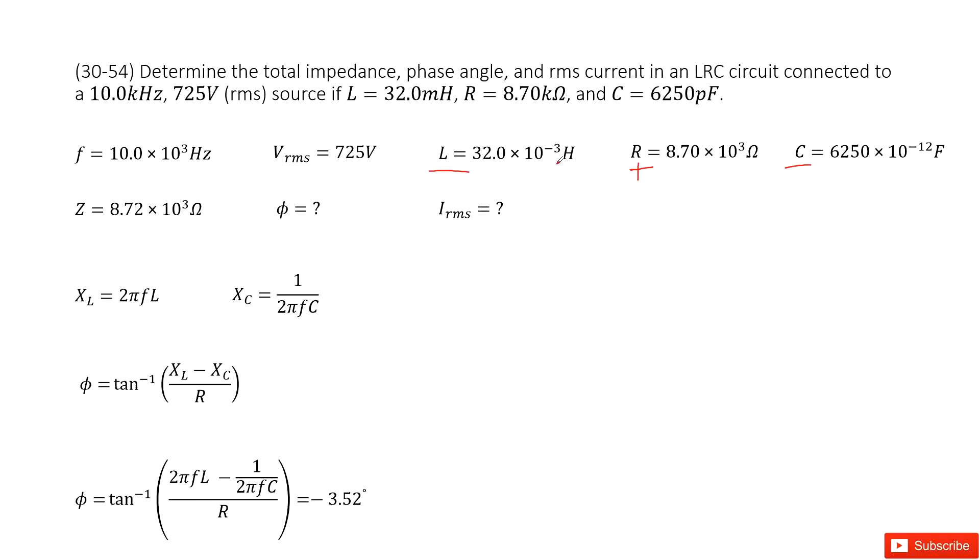The next one, we need to find the current at the root mean squared. So this is not very difficult. As we learned in this chapter, the root mean squared current can be calculated by the root mean squared voltage over impedance. So input these two inside, you get the answer there. Thank you.